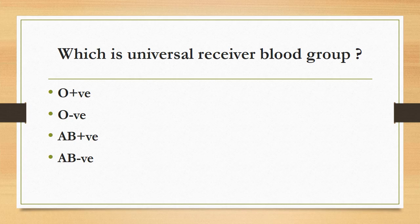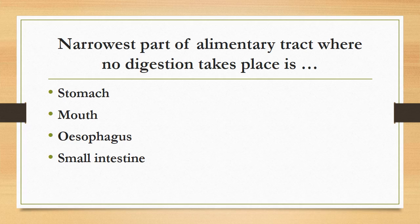Which is the universal receiver blood group? O positive, O negative, AB positive, AB negative. The correct answer is AB positive. AB positive is the universal receiver blood group, while O negative is the universal donor blood group.